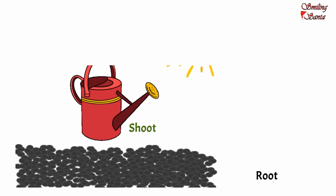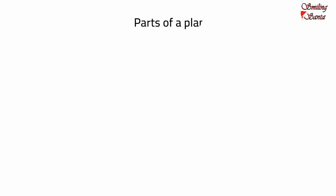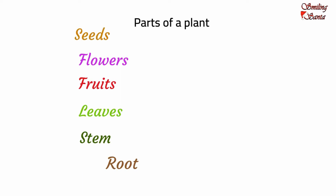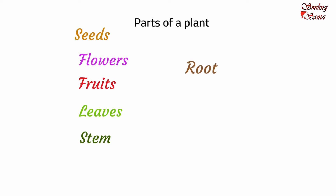The plant is made up of six basic parts: roots, stem, leaves, fruits, flower and seeds. Each part has a set of jobs to do to keep the plant healthy.